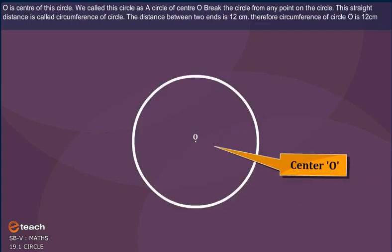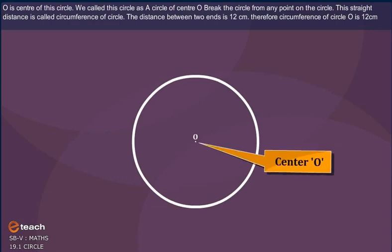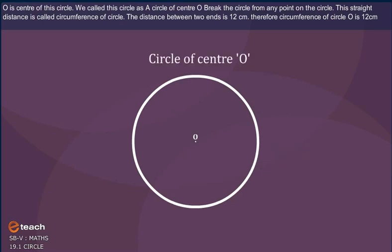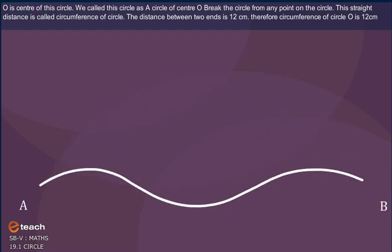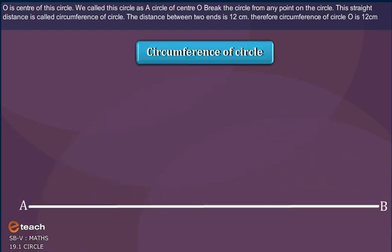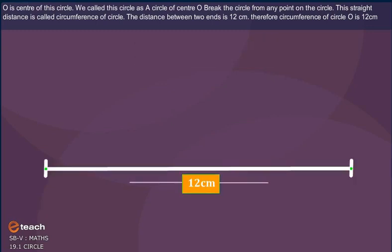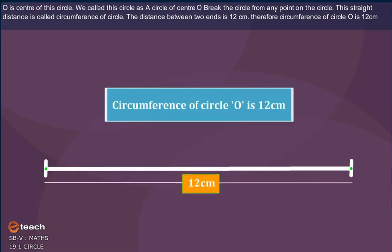O is the center of this circle. We call this circle as a circle of center O. Break the circle from any point on the circle. The straight distance is called circumference of circle. The distance between two ends is 12 cm. Therefore, circumference of circle O is 12 cm.